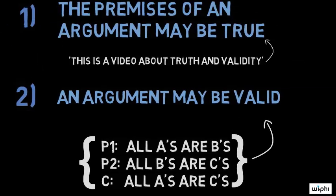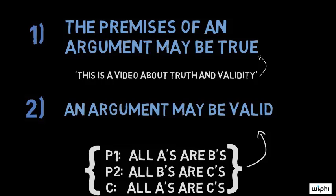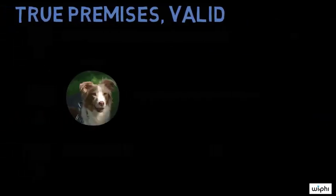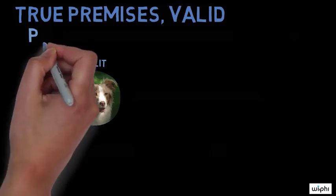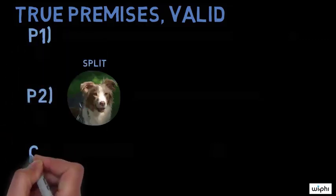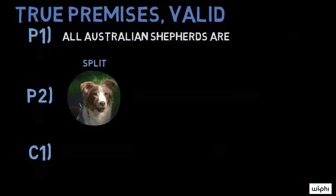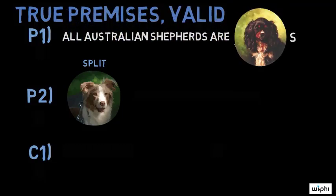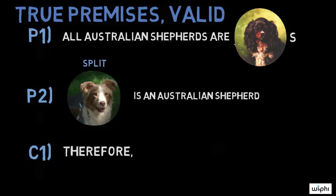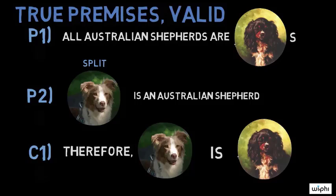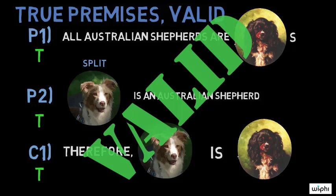To see the difference between these properties, it will be helpful to look at some examples, all of which involve my good friend Julia's dog, Split. This is an example of an argument that has true premises and is valid. Premise one: all Australian shepherds are dogs. Premise two: Split is an Australian shepherd. Therefore, Split is a dog. In this argument, not only are the premises true, but the conclusion follows logically from them.